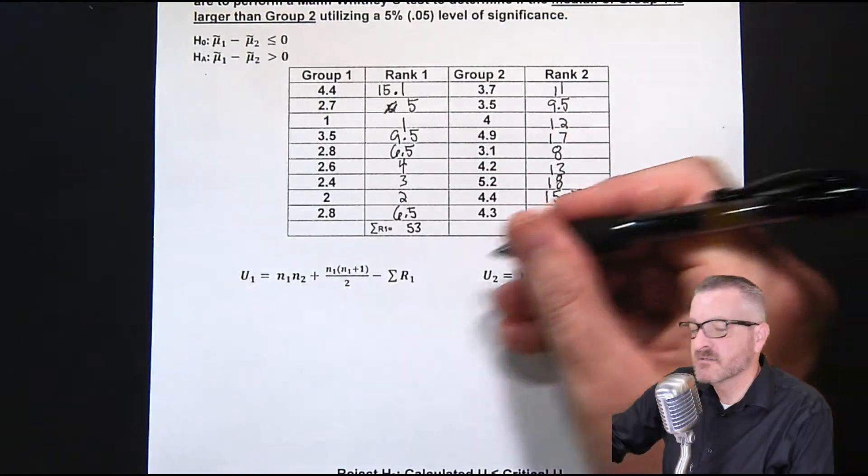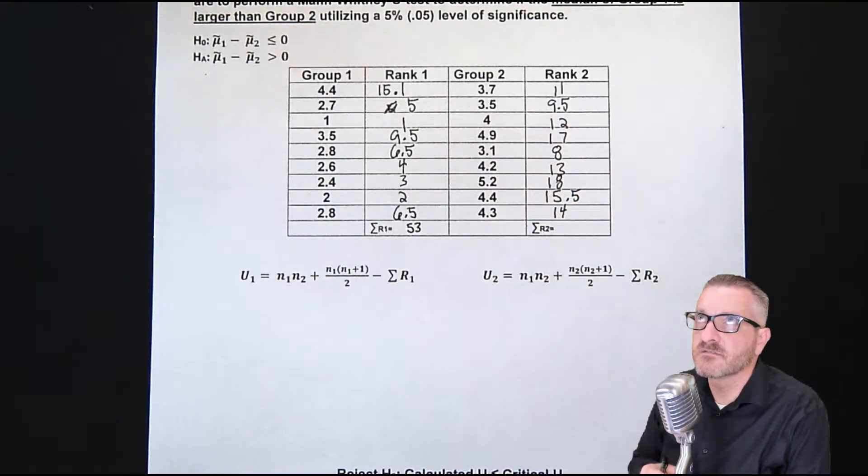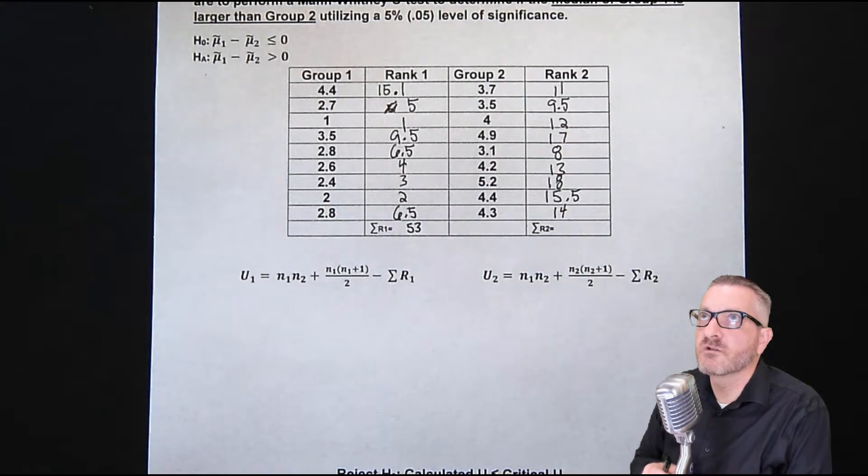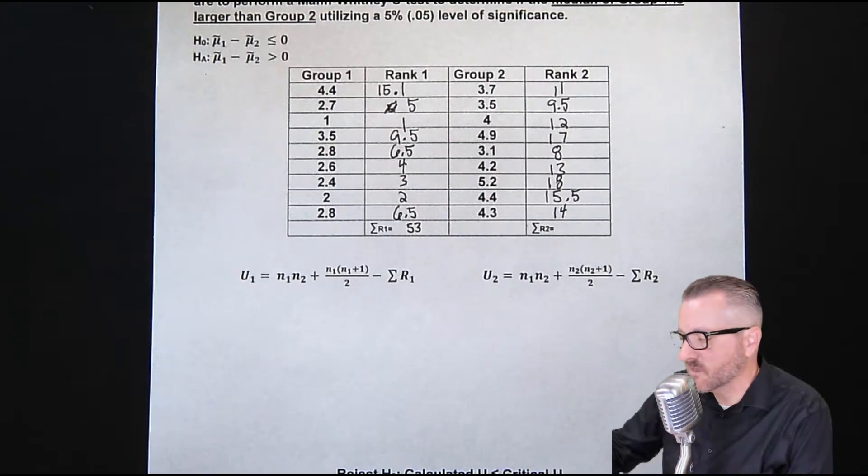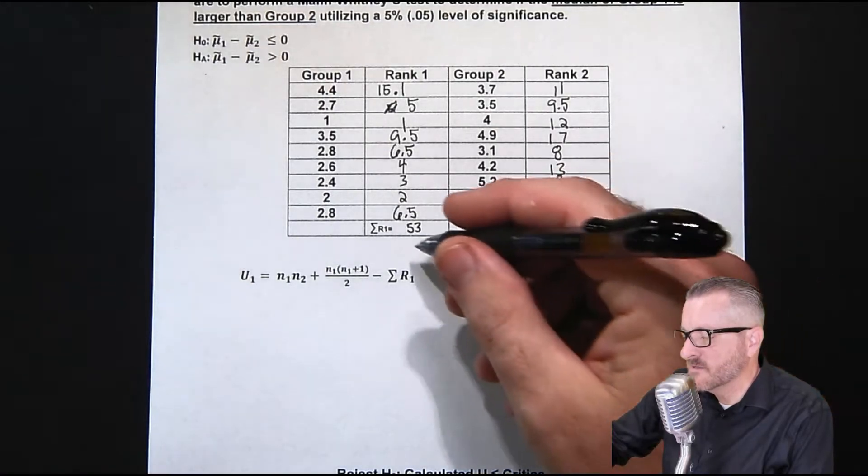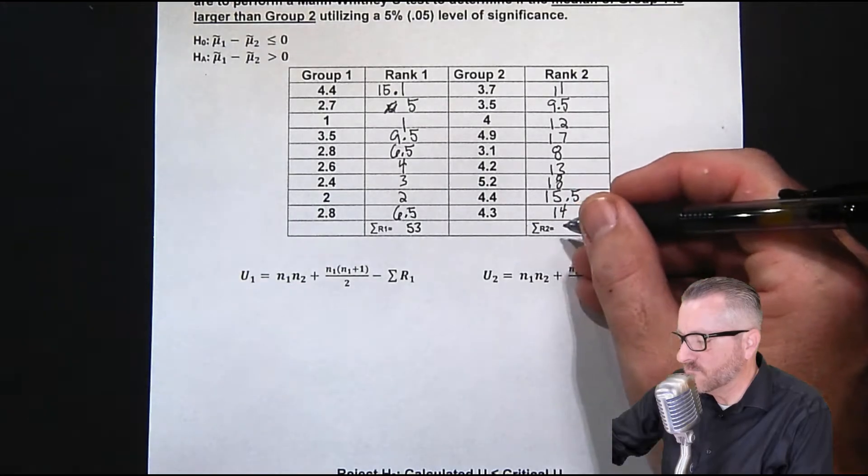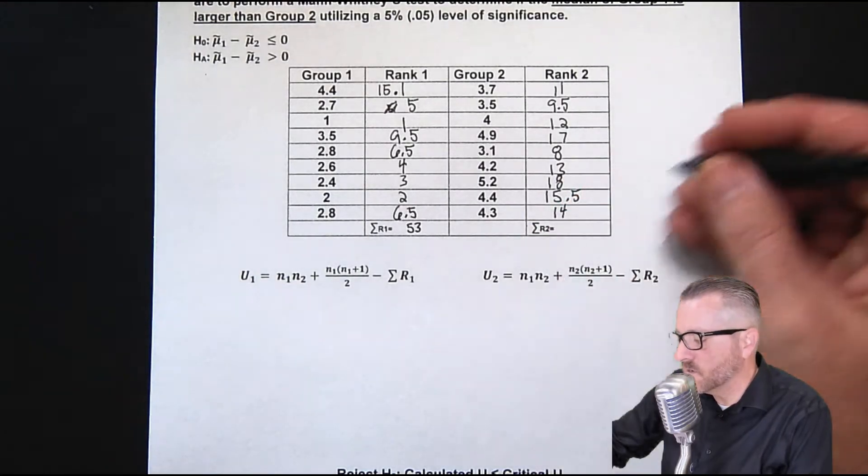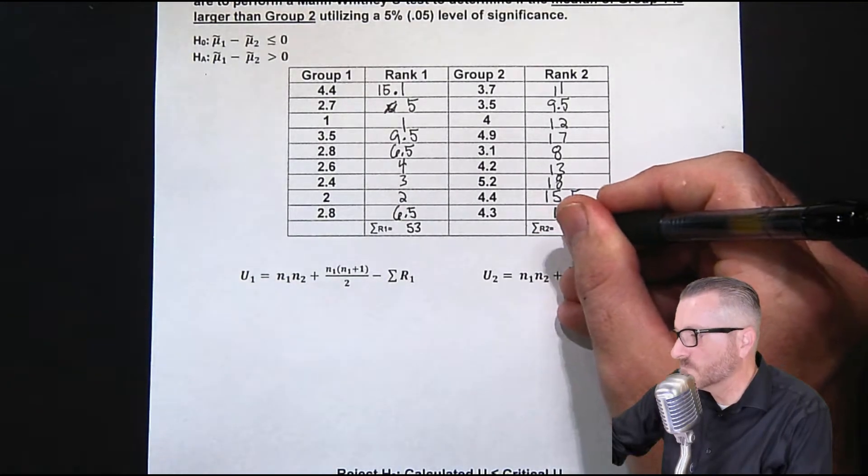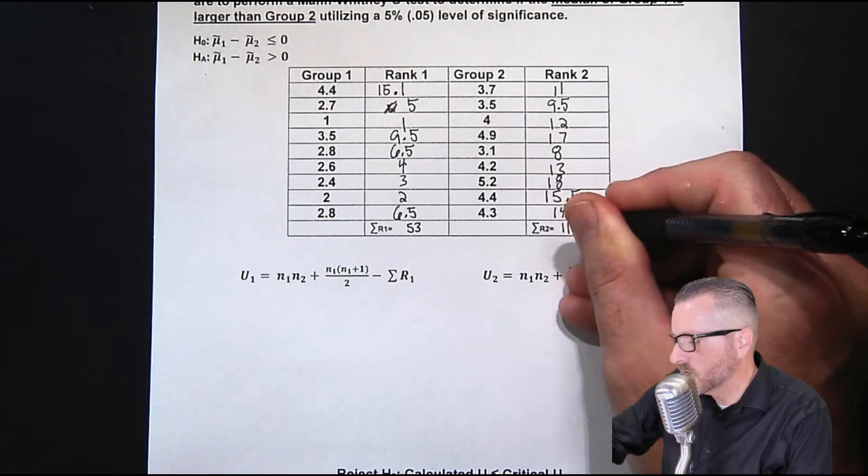Remember, with medians, medians have a couple characteristics in that they work well if you have outliers as well. Remember with means, an outlier can really affect things. But because we're working with medians, it works well with outliers as well because it doesn't get so affected.